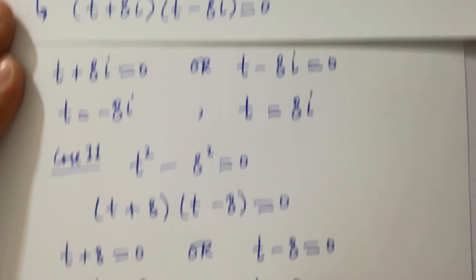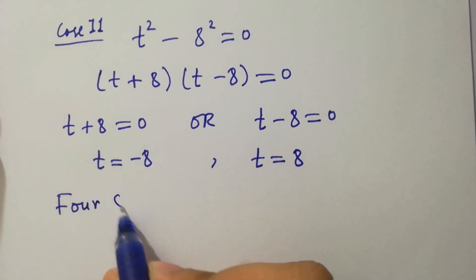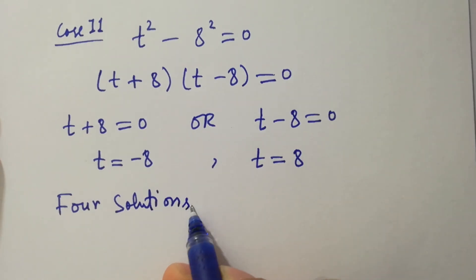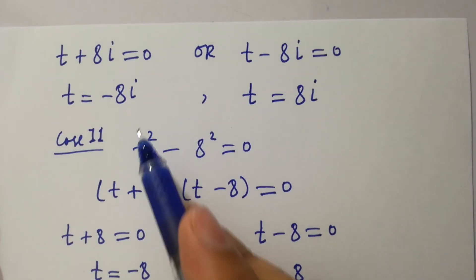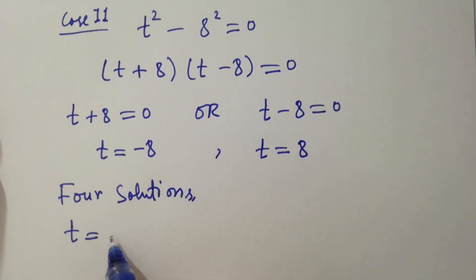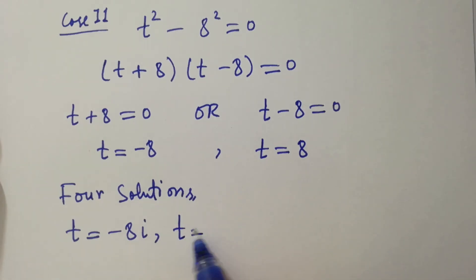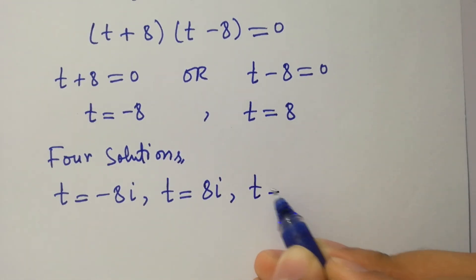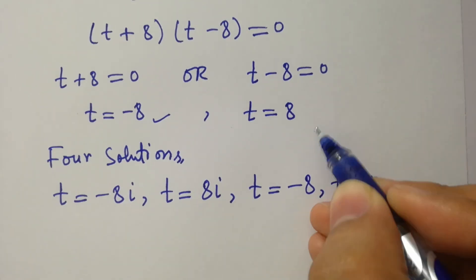We have four solutions here: t equal to minus 8i, t equal to plus 8i, t equal to minus 8, and t equal to plus 8.